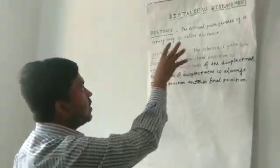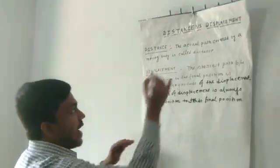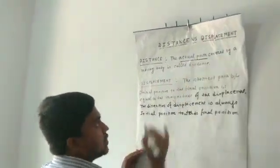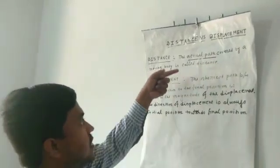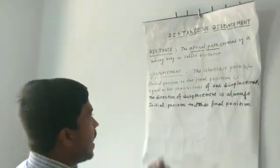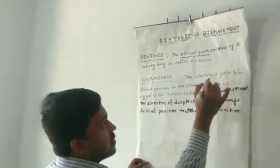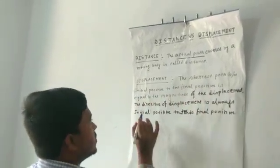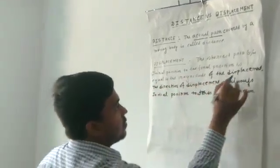So, distance means the actual path covered by a body — the main key point or focus point is the actual path. Actual path covered by a moving body is called distance. And for displacement, the shortest path between initial position to the final position is equal to the magnitude of the displacement.